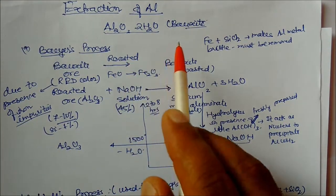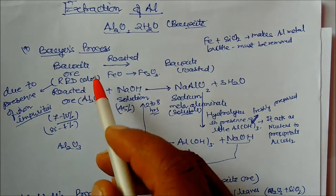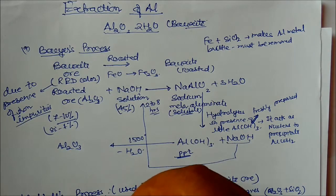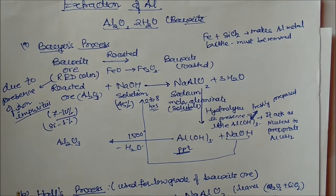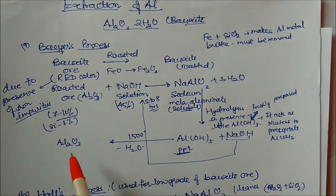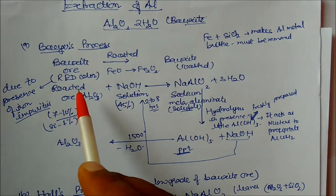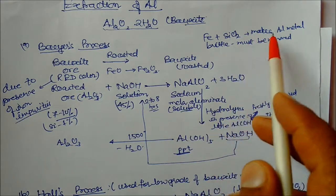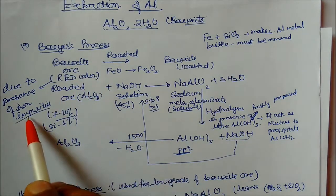Now, extraction of aluminium. The main ore used is bauxite (Al2O3·2H2O). There are three processes: Bayer's process, Hall's process, and Serpeck's process, depending on the type of impurities. Bauxite generally contains two types of impurities: iron oxide impurities and silicon oxide impurities, both of which must be removed as they make bauxite brittle.